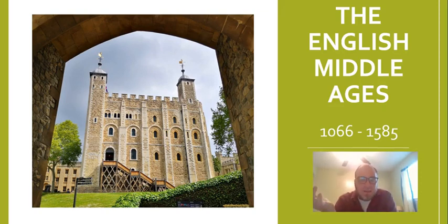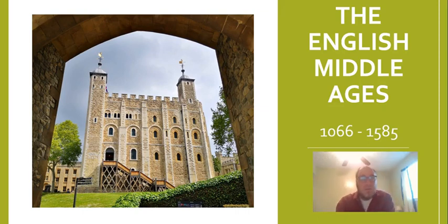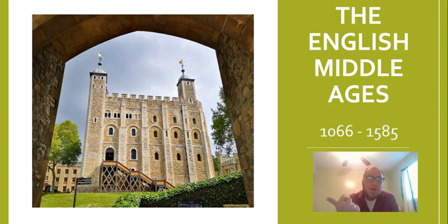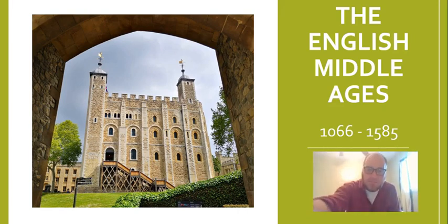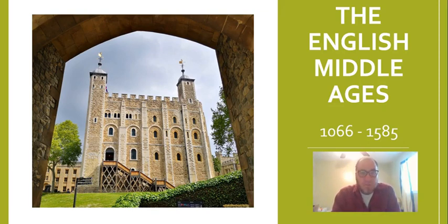Before I even get into these slides, let's talk briefly about the event that changes this. I already went over it in an earlier lecture on the history of the English language, so I don't want to spend a ton of time on the conquest. But if you recall, there was an Anglo-Saxon king named Edward the Confessor, and he died without leaving a son, without leaving an heir. There was a power vacuum in England, and the noblemen elected this guy, Harold Godwinson, to become king.